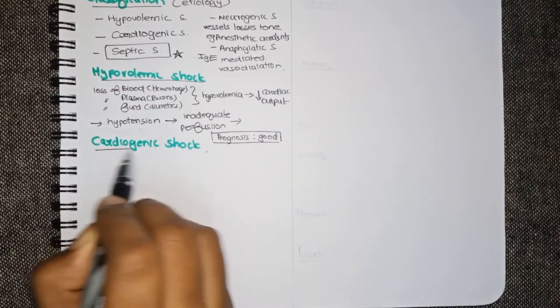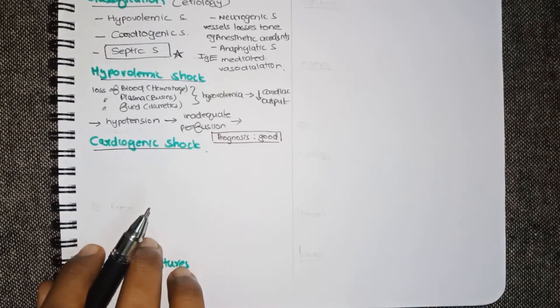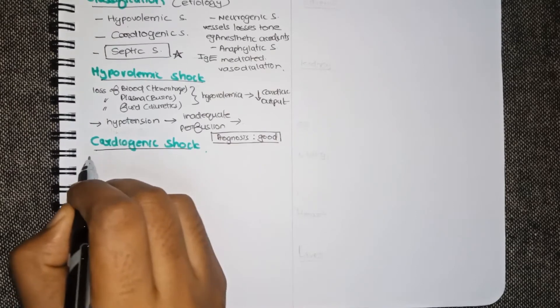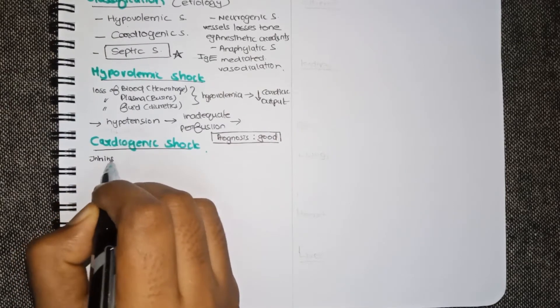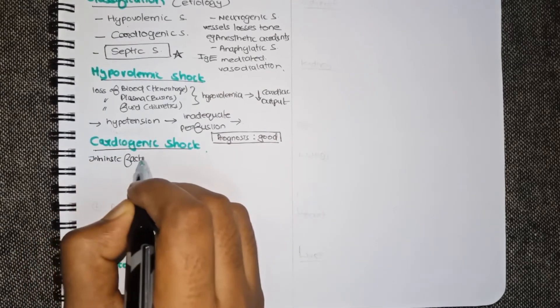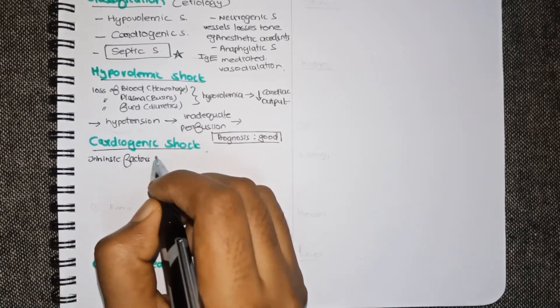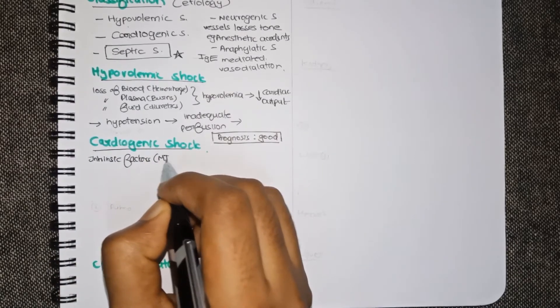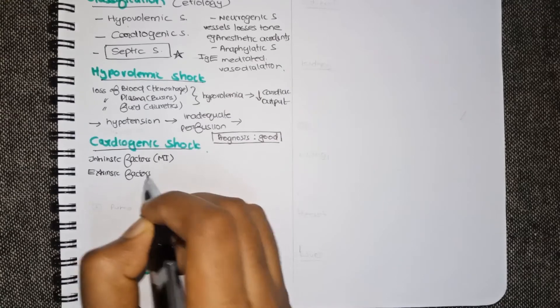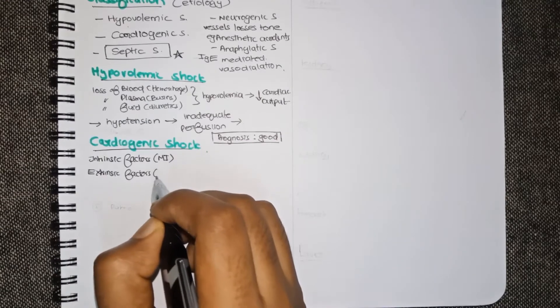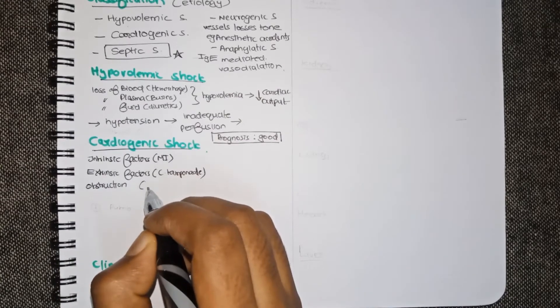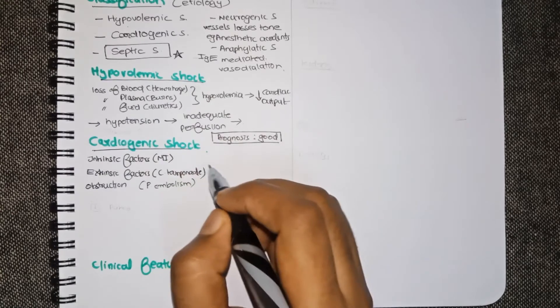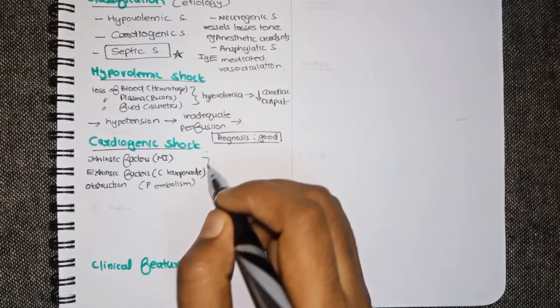Next is cardiogenic shock that is related to the heart. It can be due to a lot of factors which are divided as intrinsic factors, for example myocardial infarction, extrinsic factors like cardiac tamponade, or can be obstruction as in case of pulmonary embolism.